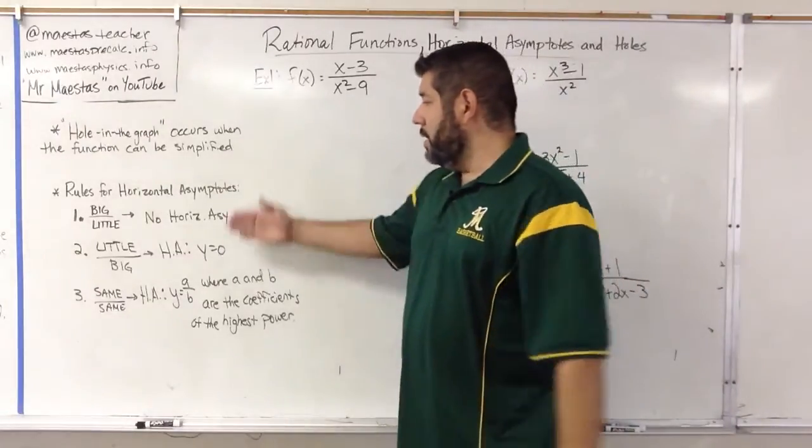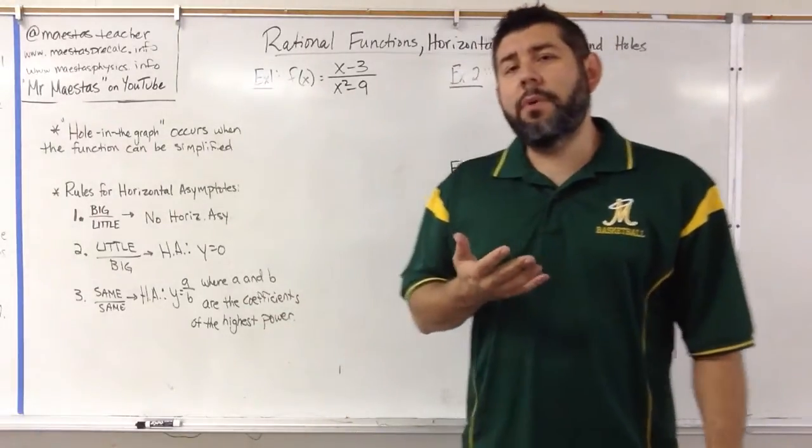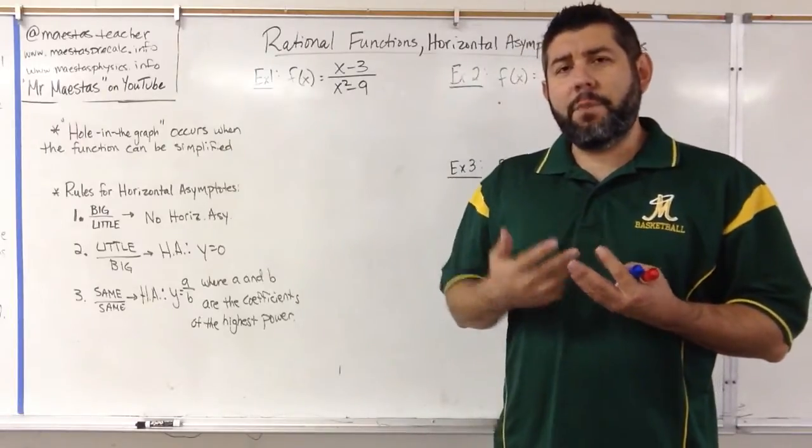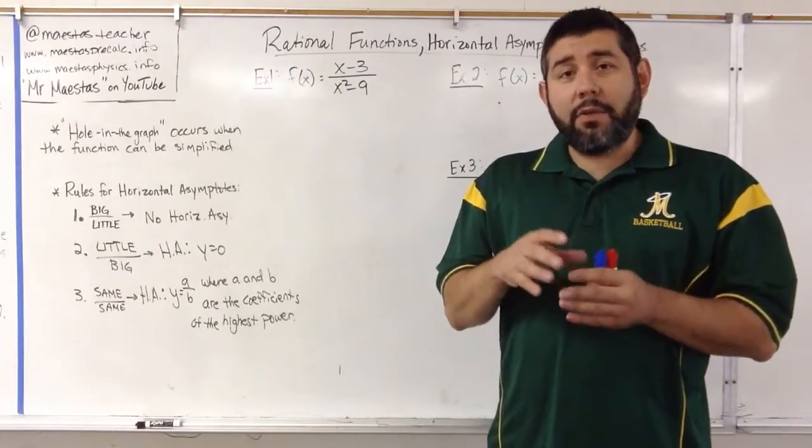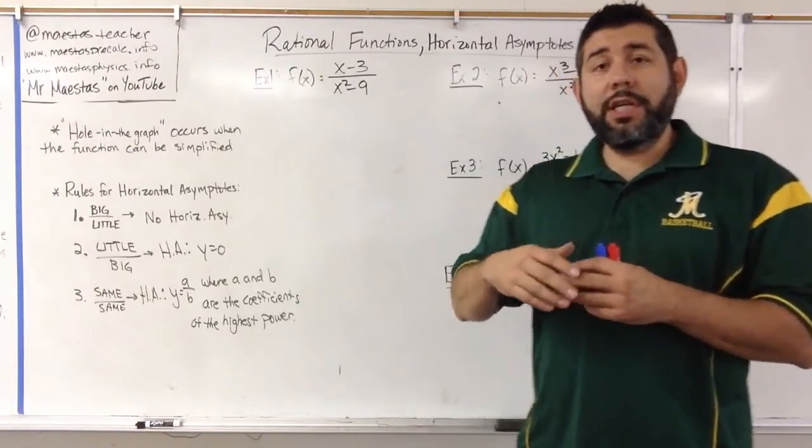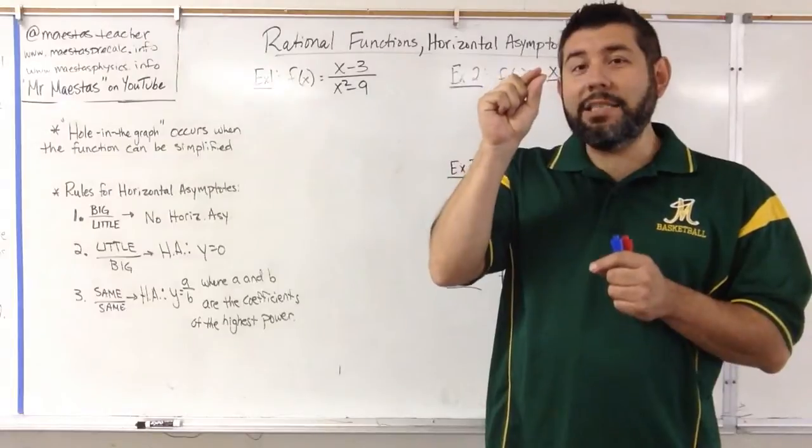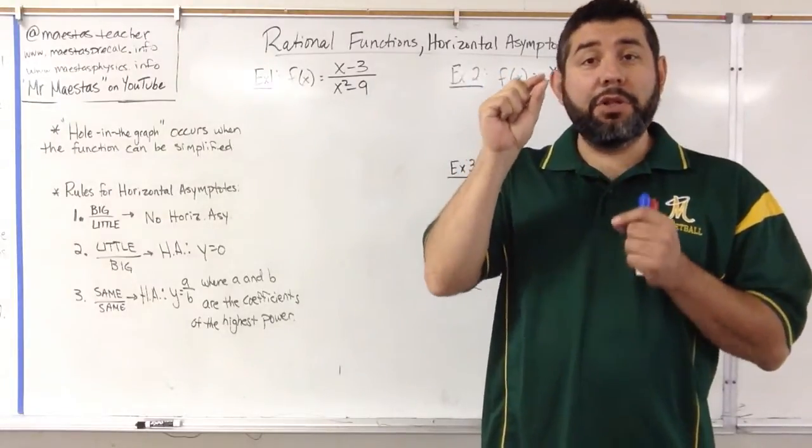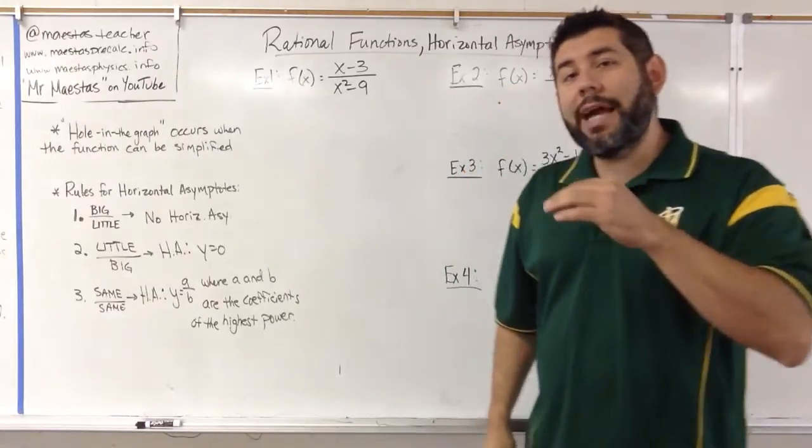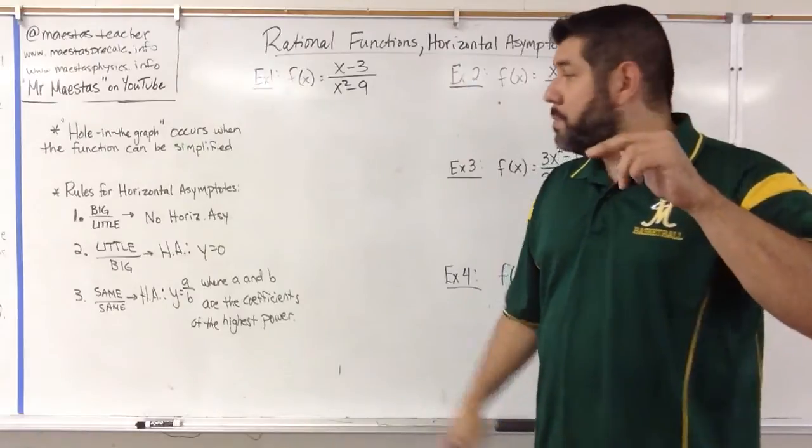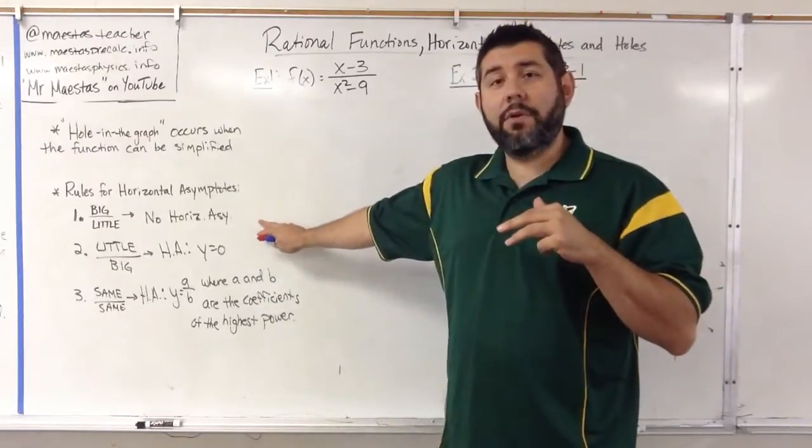The first one is big over little, and we have no horizontal asymptote. When you're looking at the rational function, look at the numerator and denominator and zone in on the highest power of x, sometimes called the degree of the polynomial. If the highest power of x in the numerator is bigger than the highest power of x in the denominator, then you're going to have no horizontal asymptote.